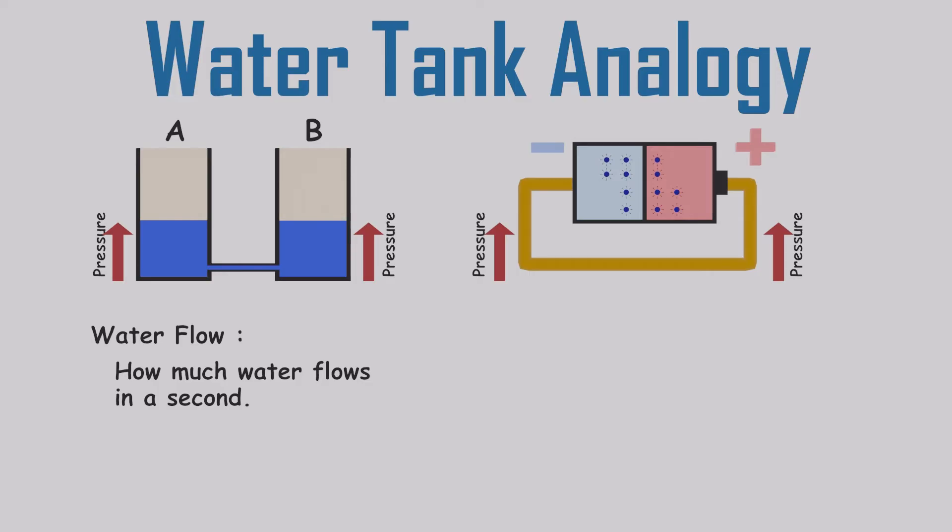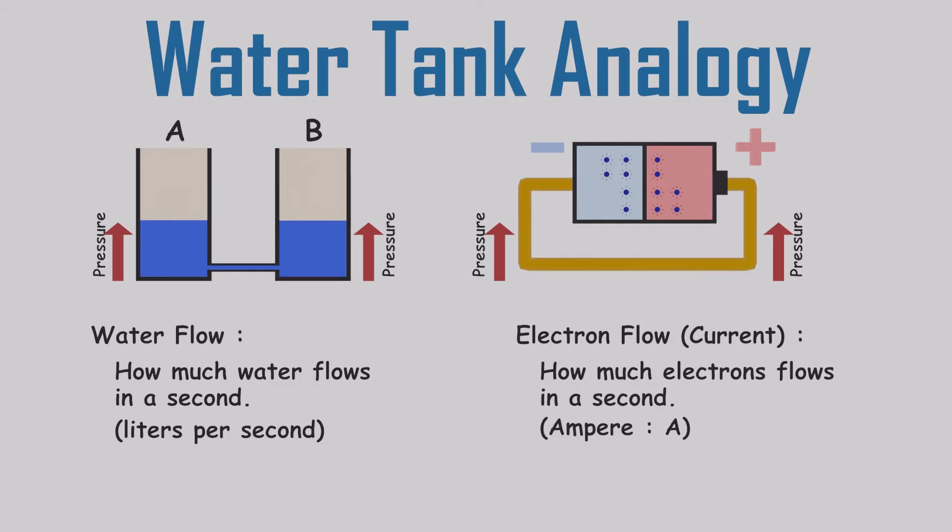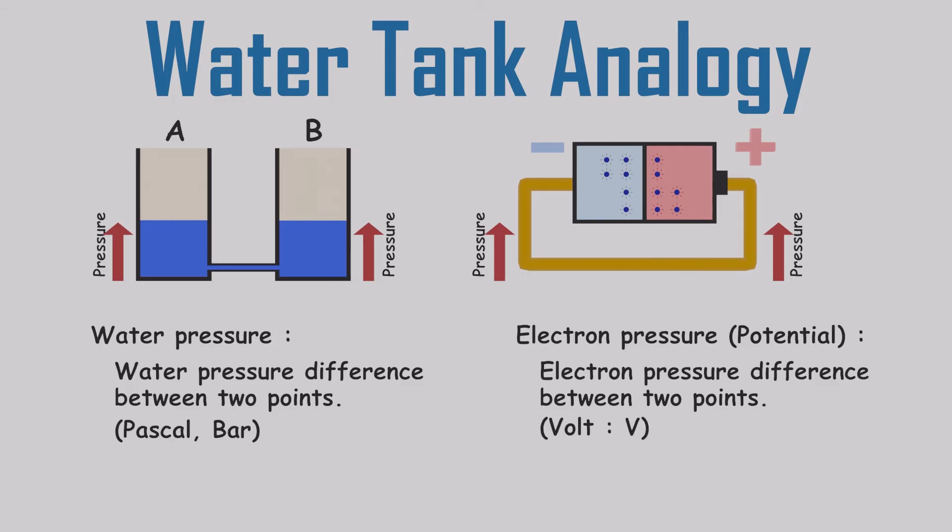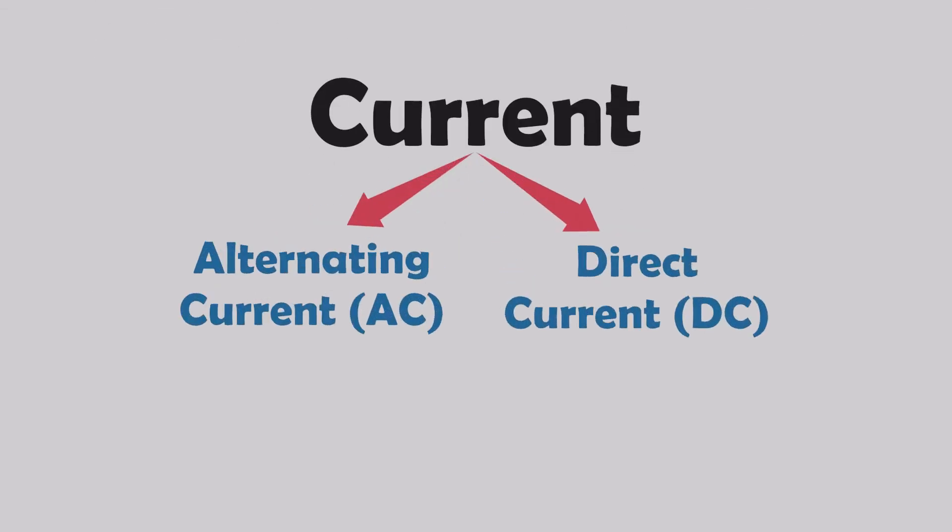Water flow can be calculated by measuring how much water moves through the pipe in a second. The units can be liters per second or something similar. In electric circuits, we calculate the electron flow by measuring how much electrons move through the wire in a second. The unit is amperes. And we can measure the water pressure using units like pascal or bar. Similarly, we measure the electron pressure in a circuit using volts.